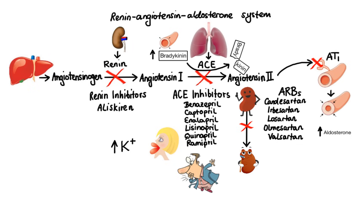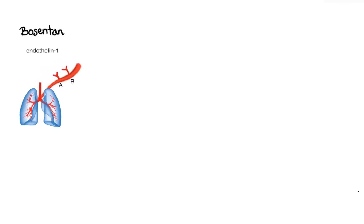Now before we end this lecture, I wanted to briefly discuss a few other antihypertensive agents that do not fall into any of the classes covered thus far. First we have bosentan, which is a competitive antagonist of a potent vasoconstrictor called endothelin-1, which acts on the endothelin-A and endothelin-B receptors located on pulmonary vascular cells. By blocking the action of endothelin-1 on its receptors, bosentan leads to vasodilation which decreases pulmonary vascular resistance, making it often a drug of choice for treatment of pulmonary hypertension.